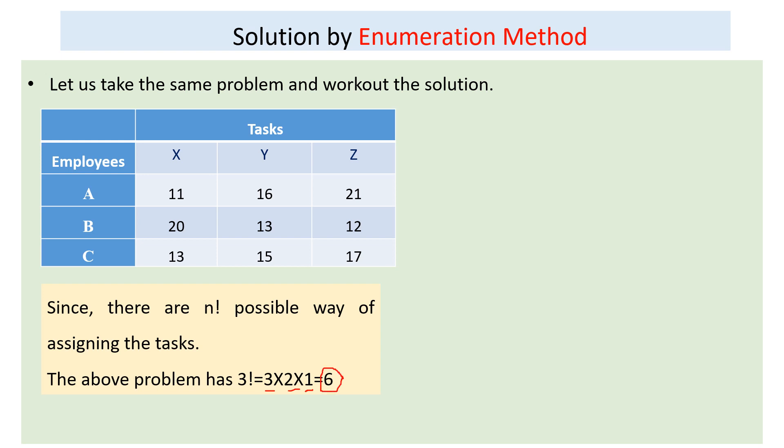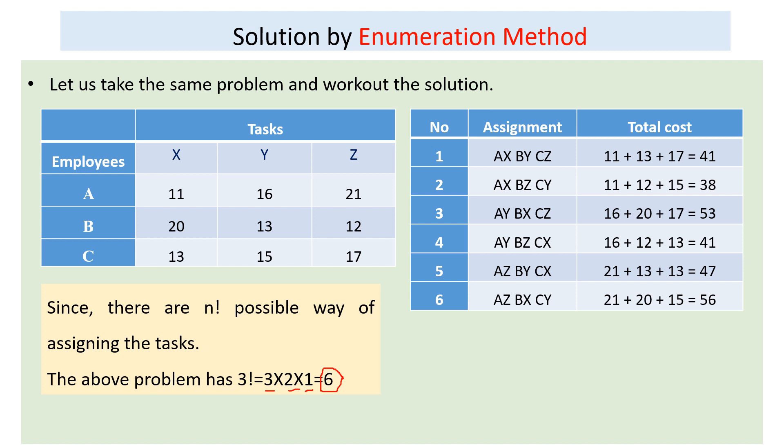We have to list down all six possible ways and select the assignment having the least cost to accomplish all the tasks. For example, assign A to X requiring 11, B to Y requiring 13, and C to Z requiring 17, so we add 11 + 13 + 17. Like this, for each pattern we list A to X, B to Y, C to Z and add all values to get the total time.